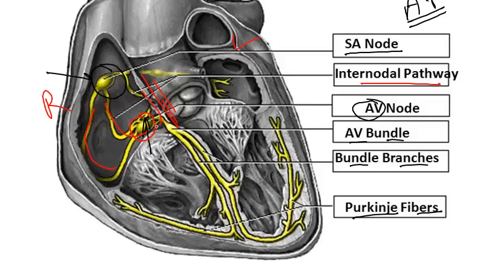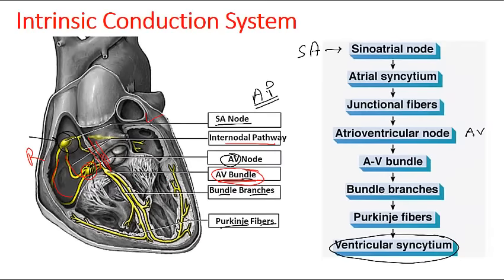The impulse is transferred from the AV node to the AV bundle. The AV bundle is the only electrical connection present between the atria and the ventricle. It is very important to transfer the electrical signal from the AV node to the rest of the ventricular area, because the major start point of this impulse is the atrium — not the ventricle. The AV bundle allows the action potential to move from the inter-atrial septum to the intraventricular septum and connects through to the bundle branches.